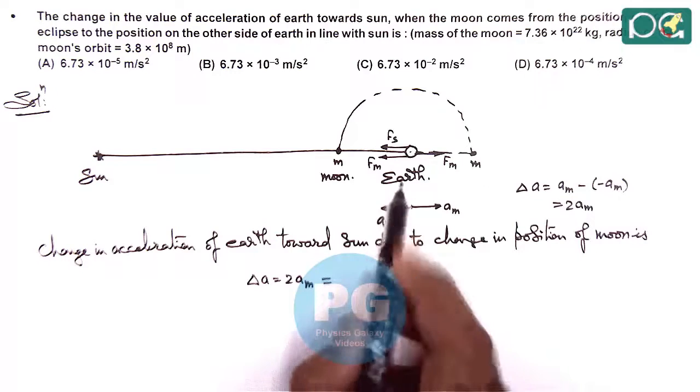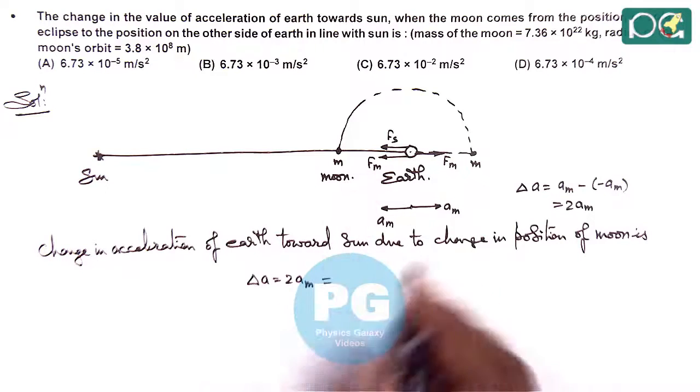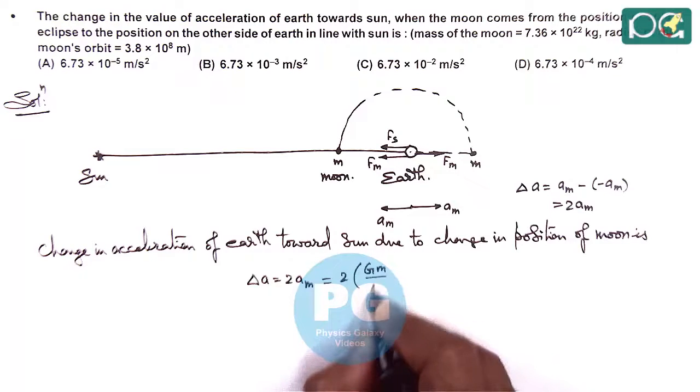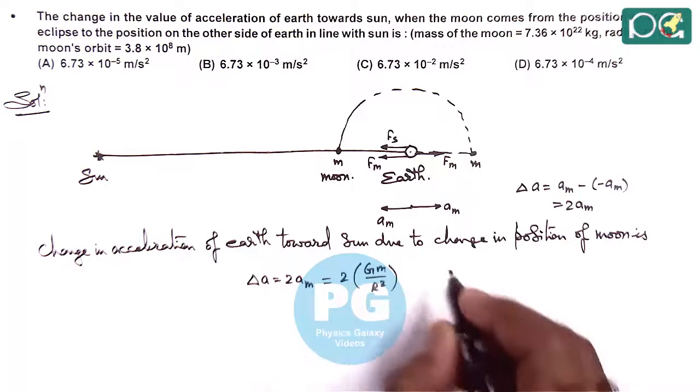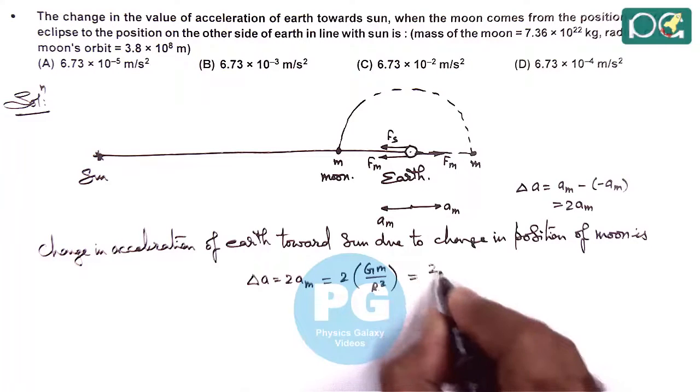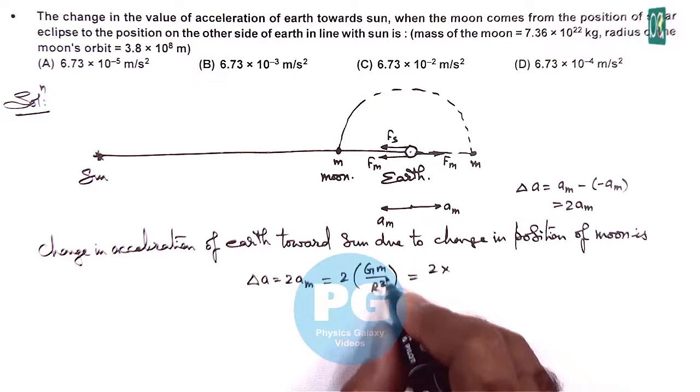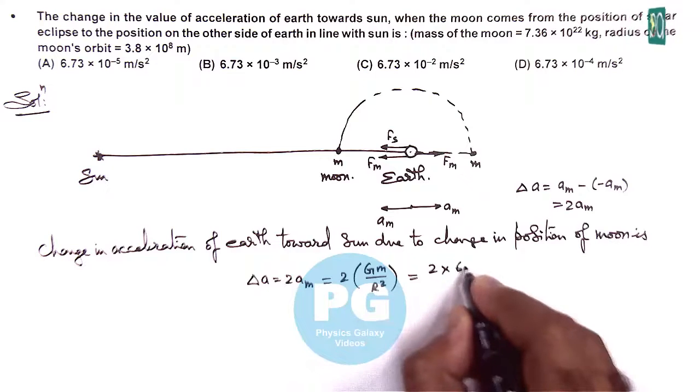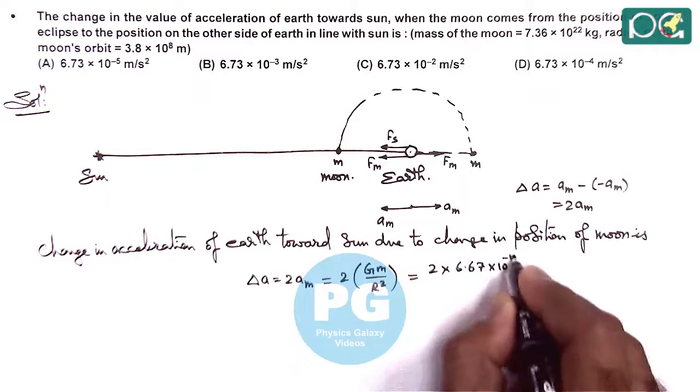So acceleration of earth due to moon can be given as Gm by r square. When numerically we can substitute the values, so this is twice of, G is 6.67 × 10^-11.